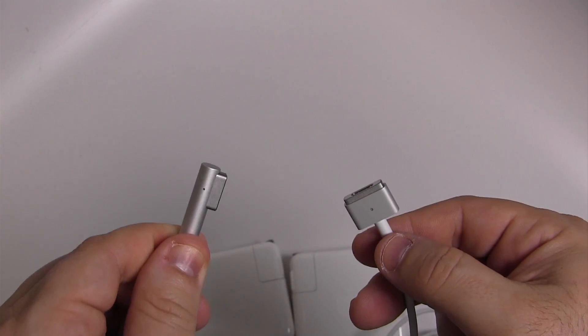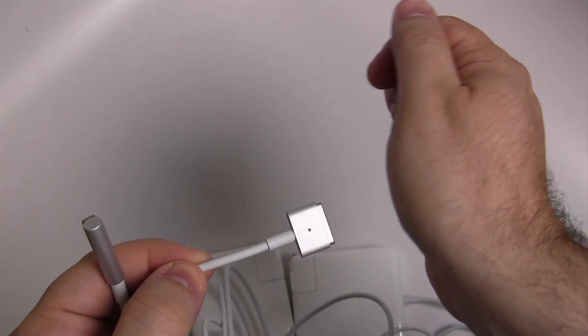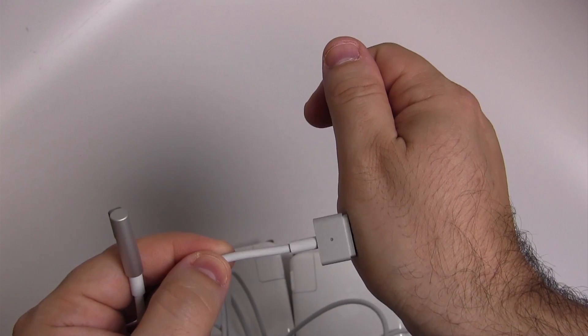The right-angle adapter, in my opinion, is far superior because it sits flush on the machine, where the straight adapter sticks out and can easily be knocked off.